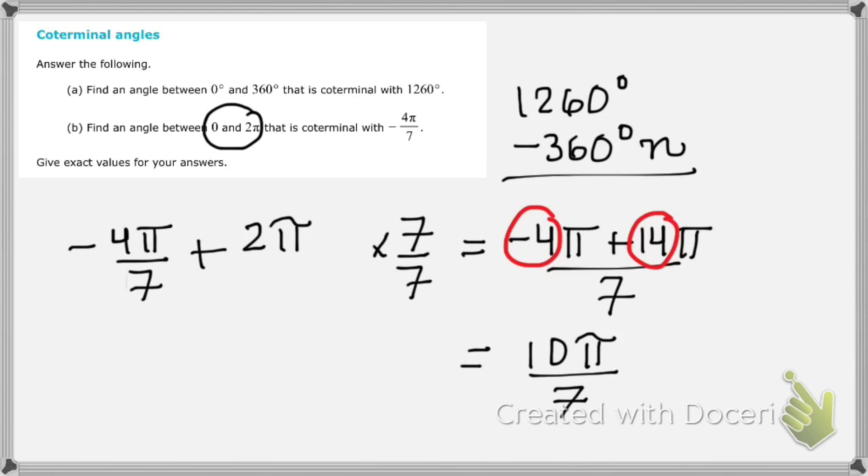So on both of these problems, I like the visual way of doing it. But we also have this simple method for doing it where we add or subtract 2πn if we're dealing in radians, and we add or subtract 360 degrees if we're dealing with degrees in order to find these coterminal angles.